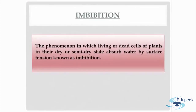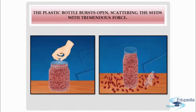Imbibition is the phenomenon in which living or dead cells of a plant in their dry or semi-dry state absorb water by surface tension. In the experiment, when the can was tightly packed and kept for a few hours, the plastic bottle bursted. It opened and the seeds scattered all around. This was the imbibition pressure acting on the seeds, due to which the plastic bottle bursted and the seeds were scattered with tremendous force.